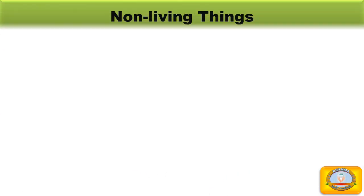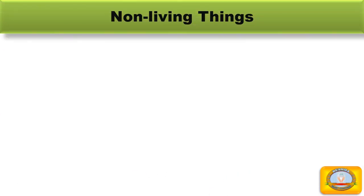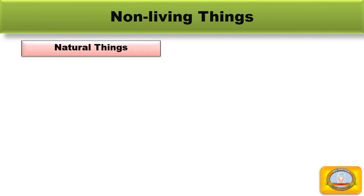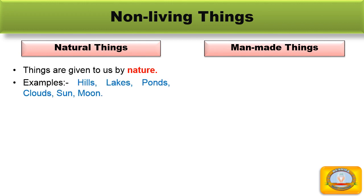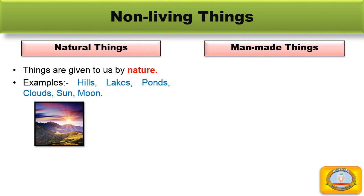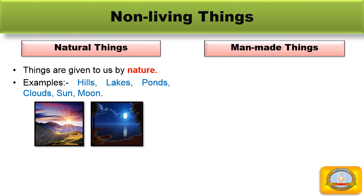Non-living things are again divided into two groups: first, natural things, and second, man-made things. Some non-living things are given to us by nature — they are called natural things. Examples: hills, lakes, ponds, clouds, sun, and moon are natural things.